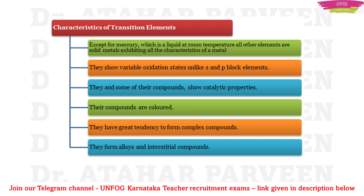In brief summary: except mercury, which is liquid at room temperature, all transition elements are solid metals. They show variable oxidation states, unlike s and p block elements. Transition elements and some of their compounds show catalytic properties, their compounds are colored, and they have a great tendency to form complex compounds. They also form alloys and interstitial compounds.